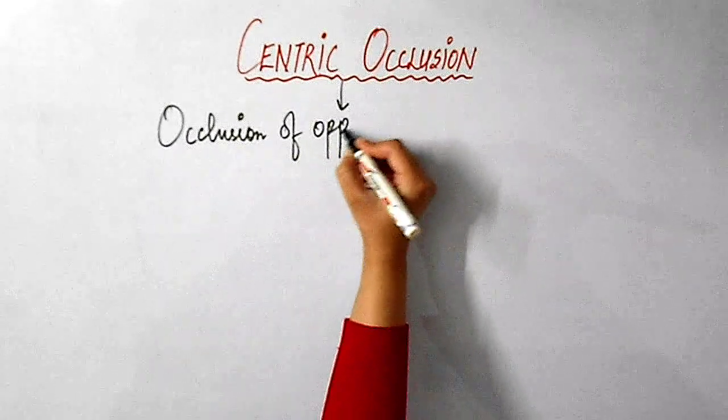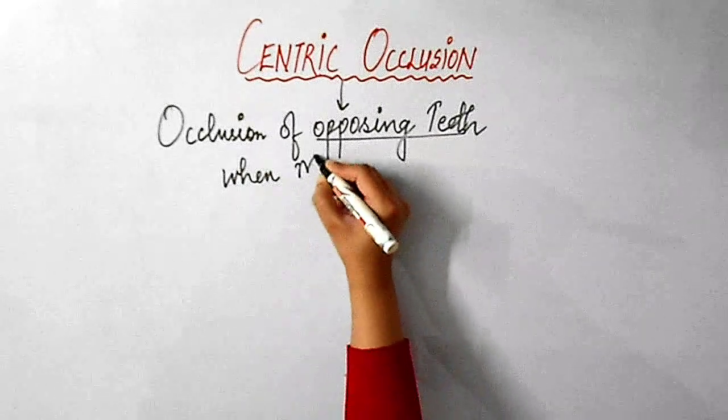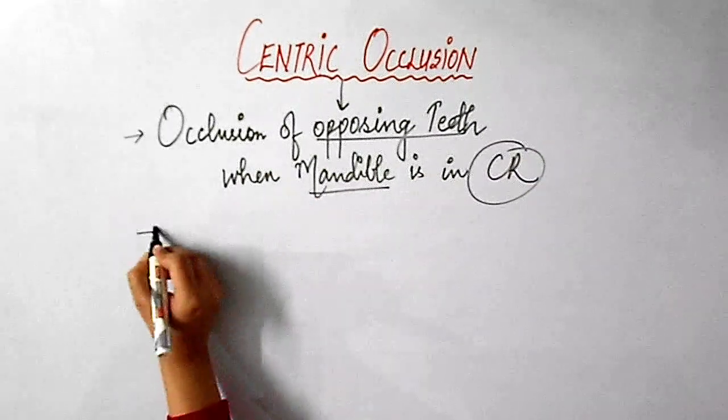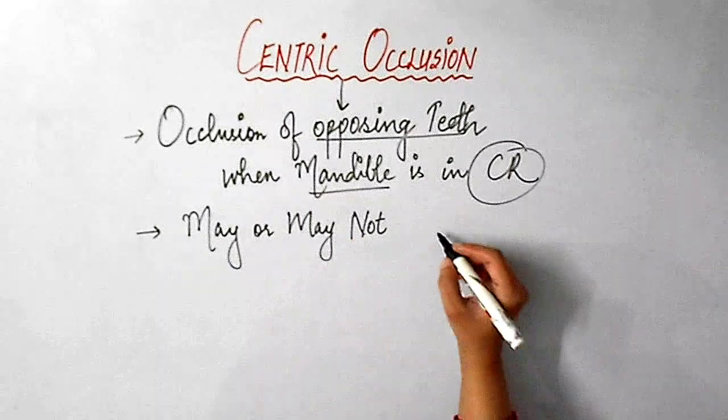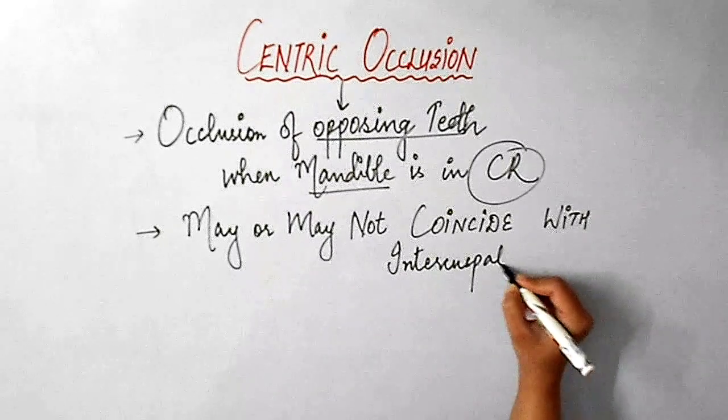Whereas centric occlusion is the occlusion of opposing teeth when the mandible is in centric relation. This centric occlusion may or may not coincide with the intercuspal position. That means it is not necessary that centric occlusion will coincide with the intercuspal position.